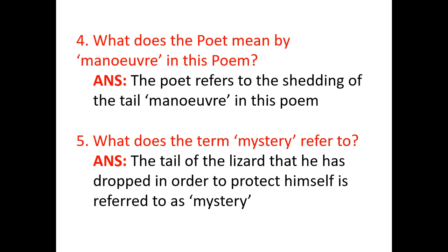Question four: what does the poet mean by 'maneuver' in this poem? The poet refers to the shedding of the tail as a maneuver — a movement that requires care and skillful execution to catch insects. What is the term 'mystery' referred to? The tail that the lizard drops in order to protect itself is referred to as the mystery. The gecko uses this tail-drop to protect itself, which is why it is called a mystery.